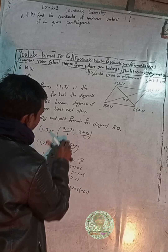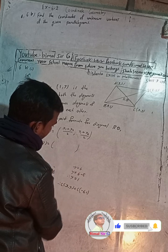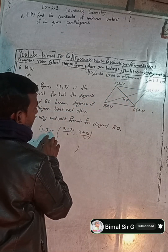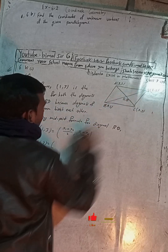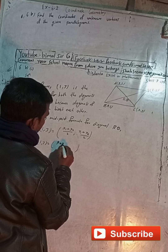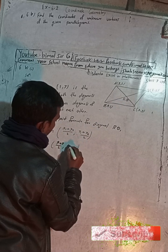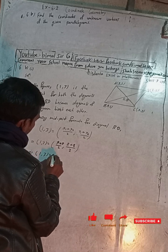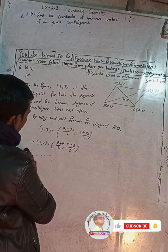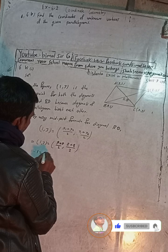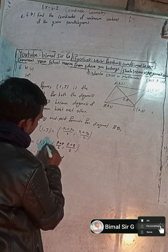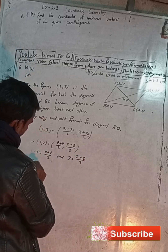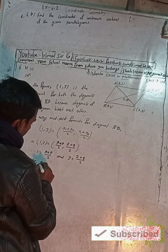For diagonal BD, the midpoint is (1, 3). So x1 is 9 and x2 is p, giving 9 plus p by 2, and y1 is 2, y2 is q, giving 2 plus q by 2. So the equation is: 1 comma 3 equals 9 plus p by 2 comma 2 plus q by 2. Therefore 1 equals 9 plus p by 2, and 3 equals 2 plus q by 2.